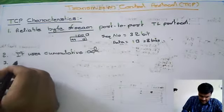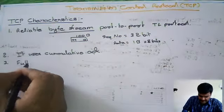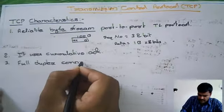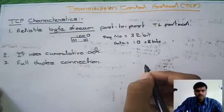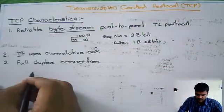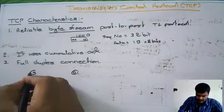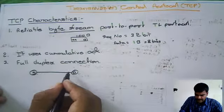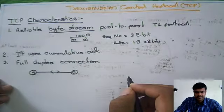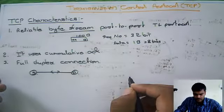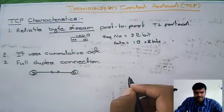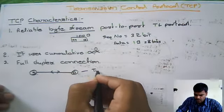The next characteristic: TCP will use a full duplex connection. Full duplex connection means we have source and destination, and we can transmit data in both directions at the same time. But for outside it will look like full duplex; when you go for the implementation, it is actually two half duplex connections.